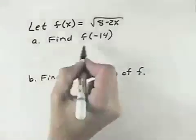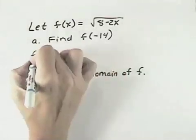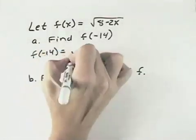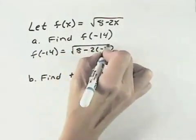So first, we'll evaluate this function at f equals negative 14. So if we want f of negative 14, that means we take 8 minus 2, but where the x was, we substitute a negative 14.